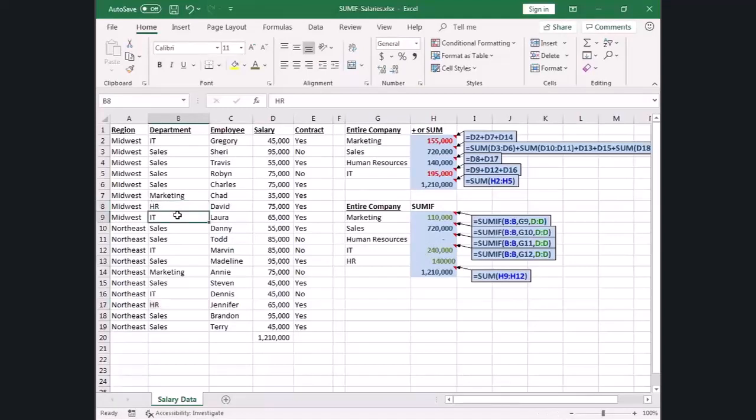So between VLOOKUP and SUMIF, you can write formulas that are resilient, that go and find the data rather than you having to go point to the data over and over again.